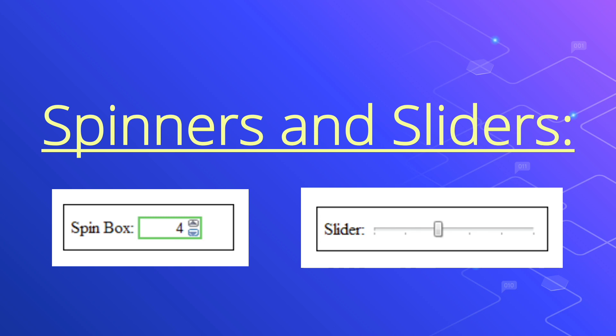The two other HTML5 controls we can add to forms are spinners and sliders. A spinner allows us to increase or decrease a number in a box by clicking little up and down arrows. We can move the slider left or right to change the value.